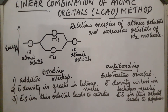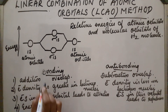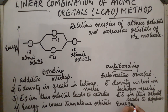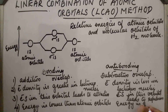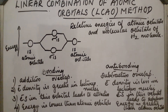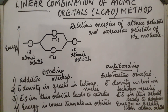Fourth point: the energy of the bonding molecular orbital is lower than that of atomic orbitals, while in the case of antibonding, the energy is greater than atomic orbitals. These are the differences between bonding and antibonding molecular orbitals.